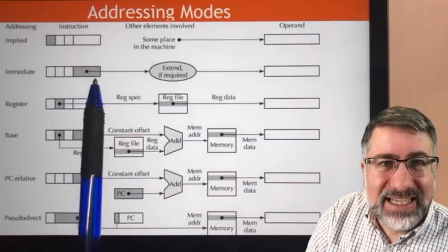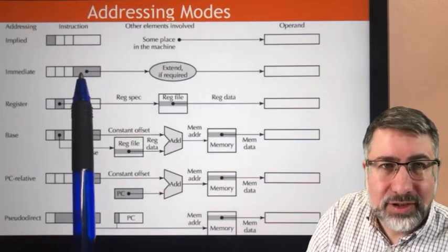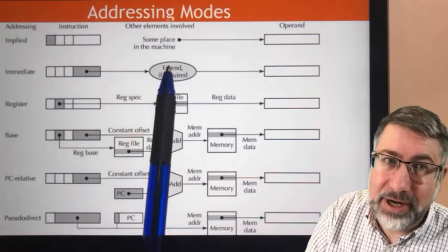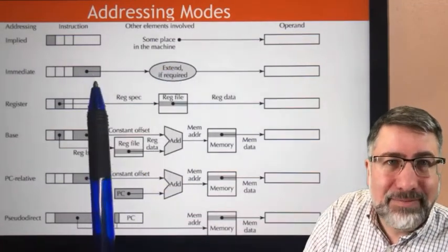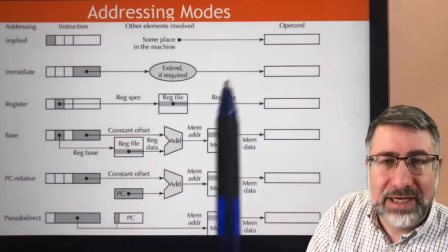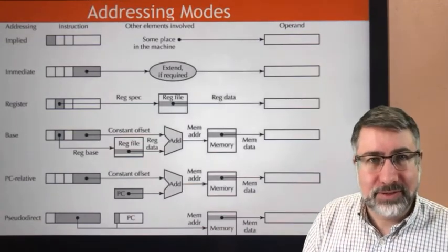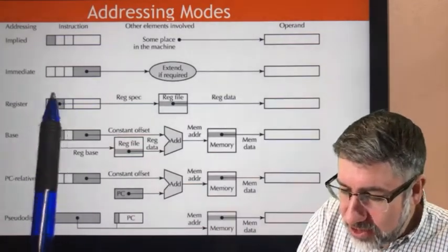Immediate addressing says that in the immediate field of the instruction is the data we're interested in. We might have to sign extend it. In fact, almost always we sign extend it. But that immediate value gets transition directly into the operand that we're interested in.